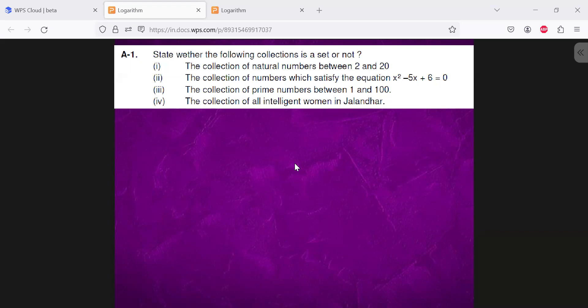So the collection of natural numbers between 2 and 20, the collection of natural numbers which satisfy the equation x square minus 5x plus 6, the collection of prime numbers between 1 and 100, the collection of all intelligent women in Jalandhar.